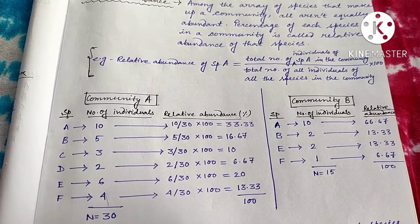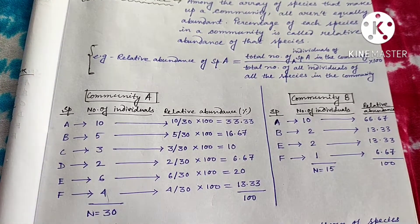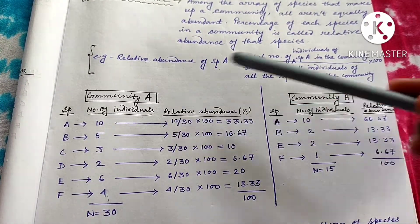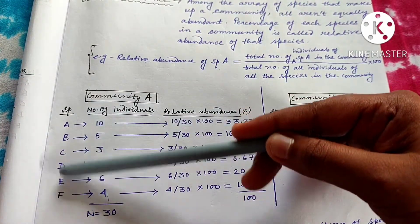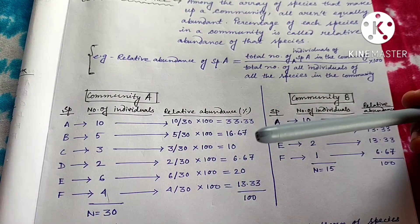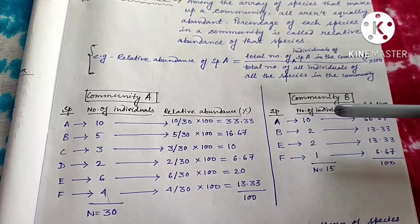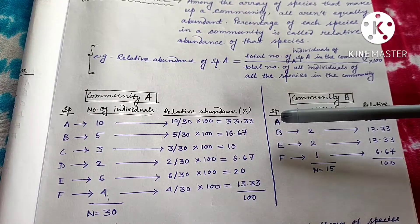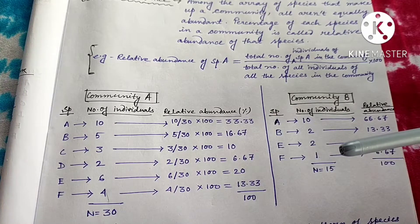This is an informative chart. Here two communities are shown: Community A and Community B. Community A has six species: A, B, C, D, E, F. So what is the species richness of Community A? Obviously six — the total number of species. And what is the species richness of Community B? It has species A, B, E, F — so four is the species richness of Community B.